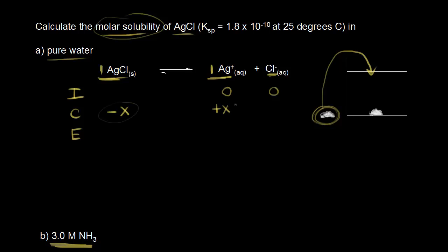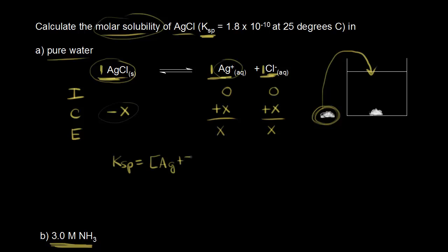If we look at our mole ratios — for every one mole of silver chloride that dissolves, we get one mole of silver plus one cations in solution. So for losing x over here, we're gaining x for the concentration of silver cations. And since our mole ratios are still one to one, if we dissolve one mole of silver chloride, we gain one mole of chloride anions, so we get a plus x. At equilibrium, the concentration of silver cations is x and the concentration of chloride anions is x. So we write our equilibrium expression: since this is a solubility equilibrium, Ksp equals concentration of Ag⁺ raised to the first power times concentration of Cl⁻ raised to the first power.